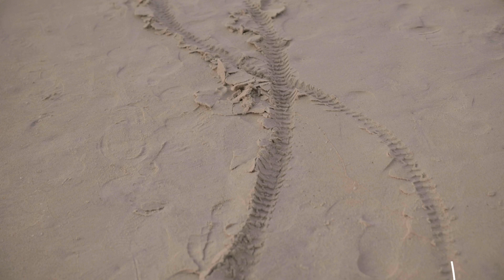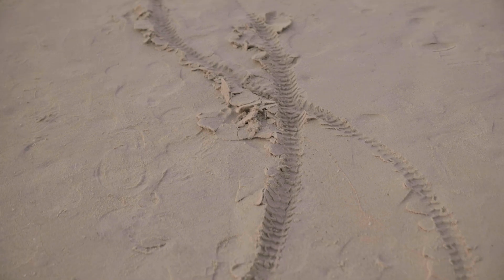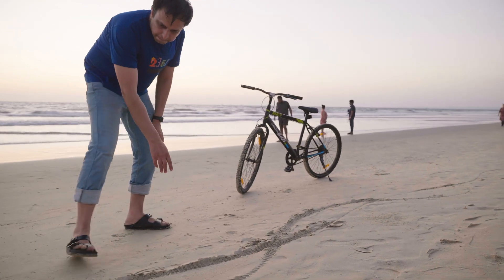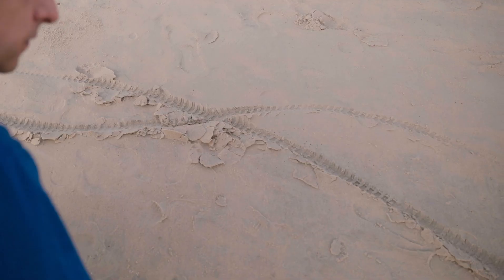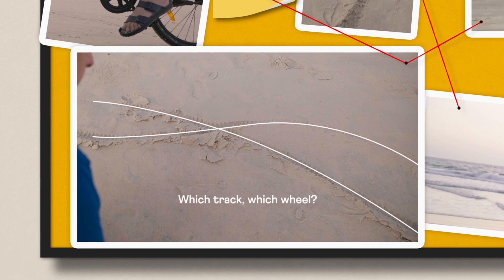See the two tracks? One is formed by the front wheel and the other by the back wheel. To know which way the bike went, we first need to know which track belongs to which wheel. Can you tell?